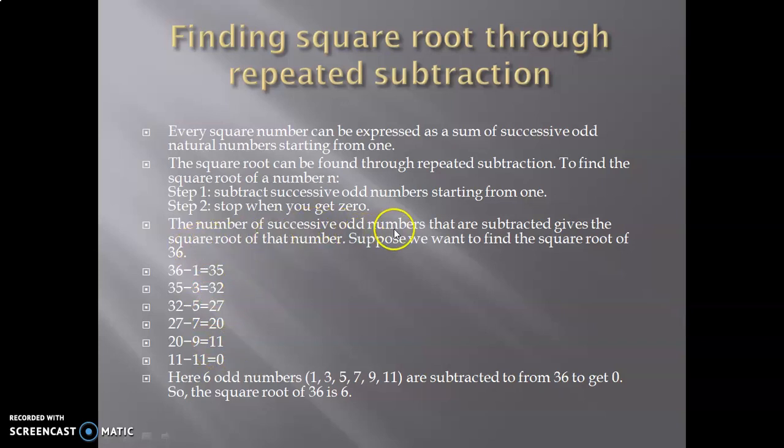The number of successive odd numbers that are subtracted gives the square root of that number. Suppose we want to find the square root of 36.